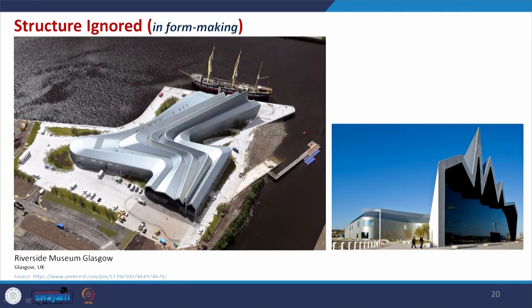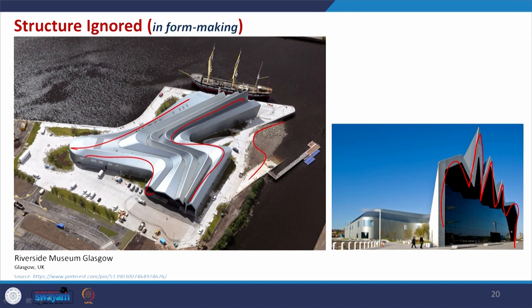This is another example designed by Zaha Hadid — the Riverside Museum, Glasgow. Here the form in plan matches the site and the waterfront. In section, it has an irregular roofing system, not a simple structure. Whatever is required to make this form match the environment and the designer's concept is followed, and accordingly structure is selected. The typical structure that could come is ignored, and this form is placed with the form creation — a very beautiful example under structure ignored.